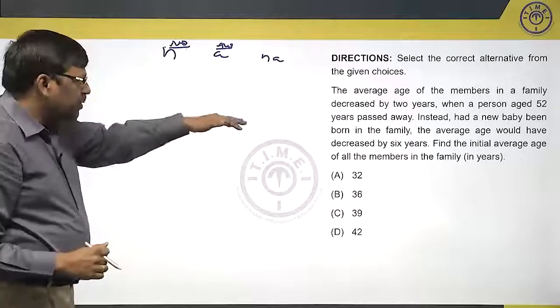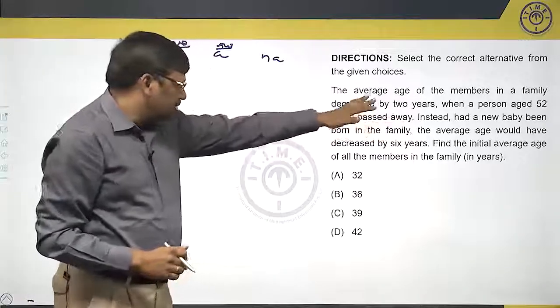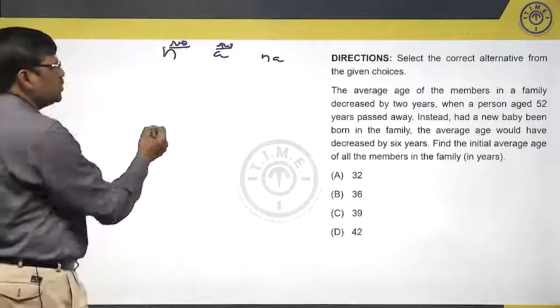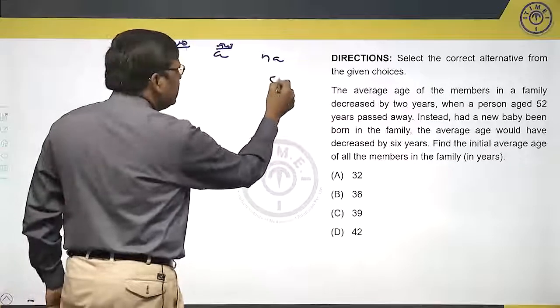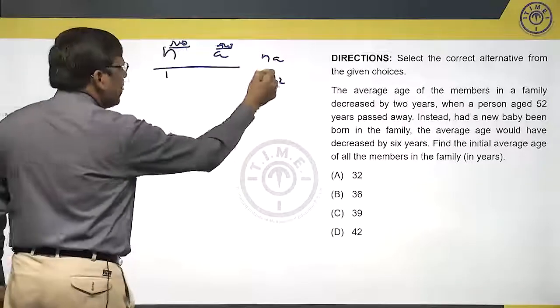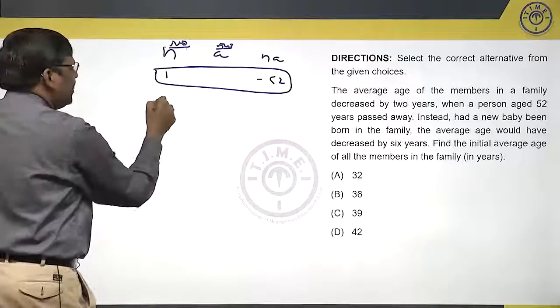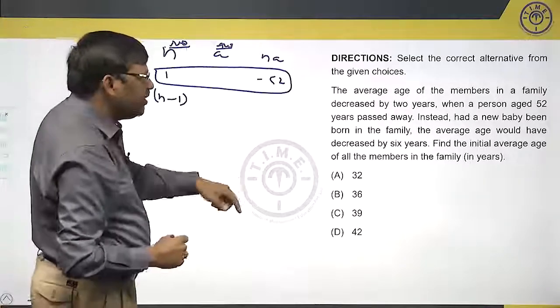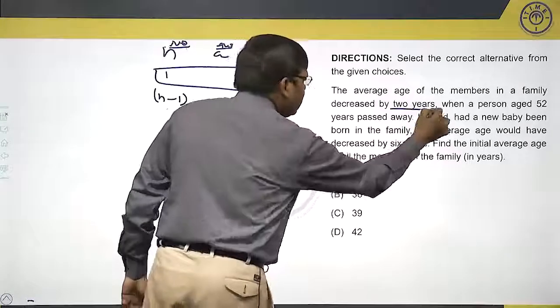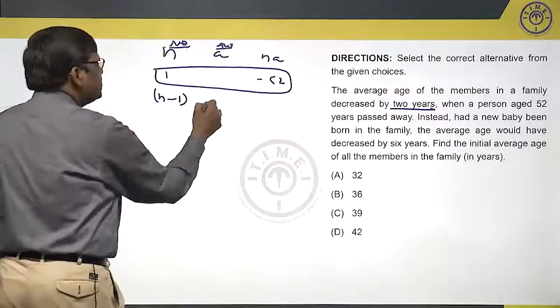Now, if one person decreased, so it will be n minus 1. What is that one person's age? 52 years. If he is going, so it will be what? I will have n minus 1 people. But now what happened to the average? Average decreased by 2 years. So now the average is a minus 2.